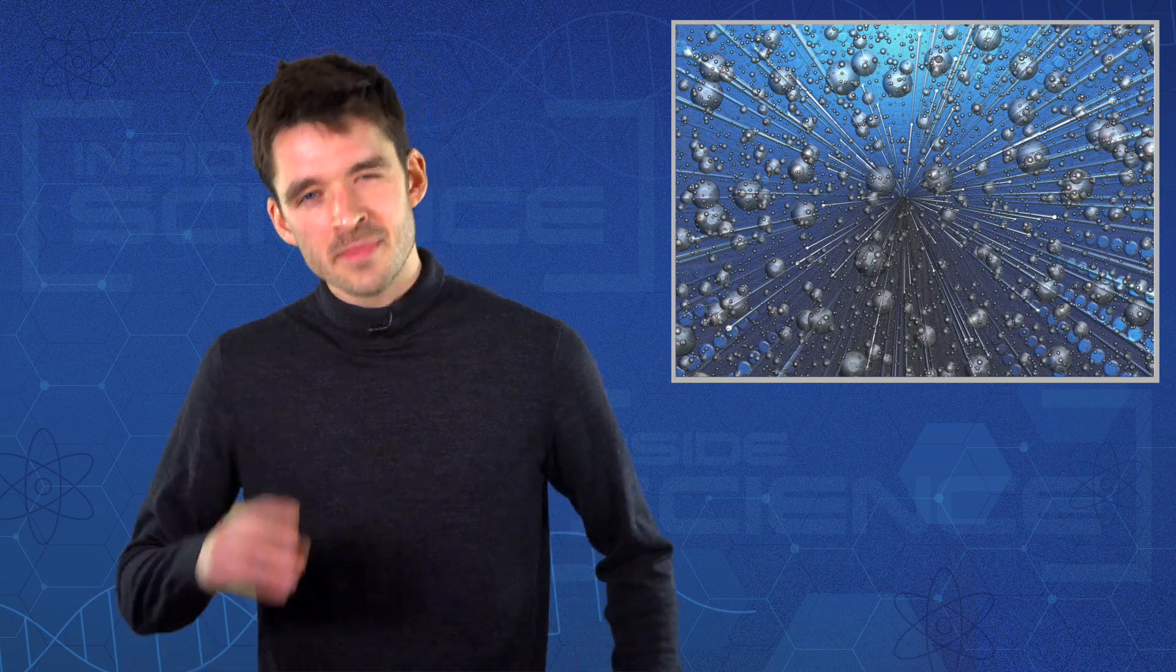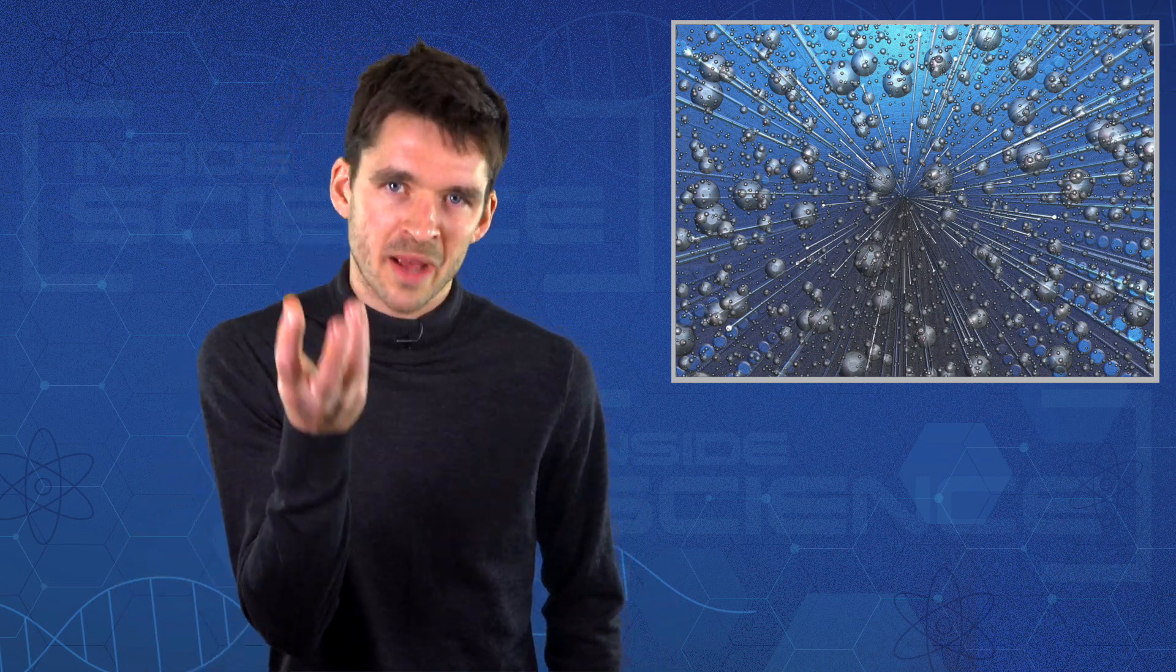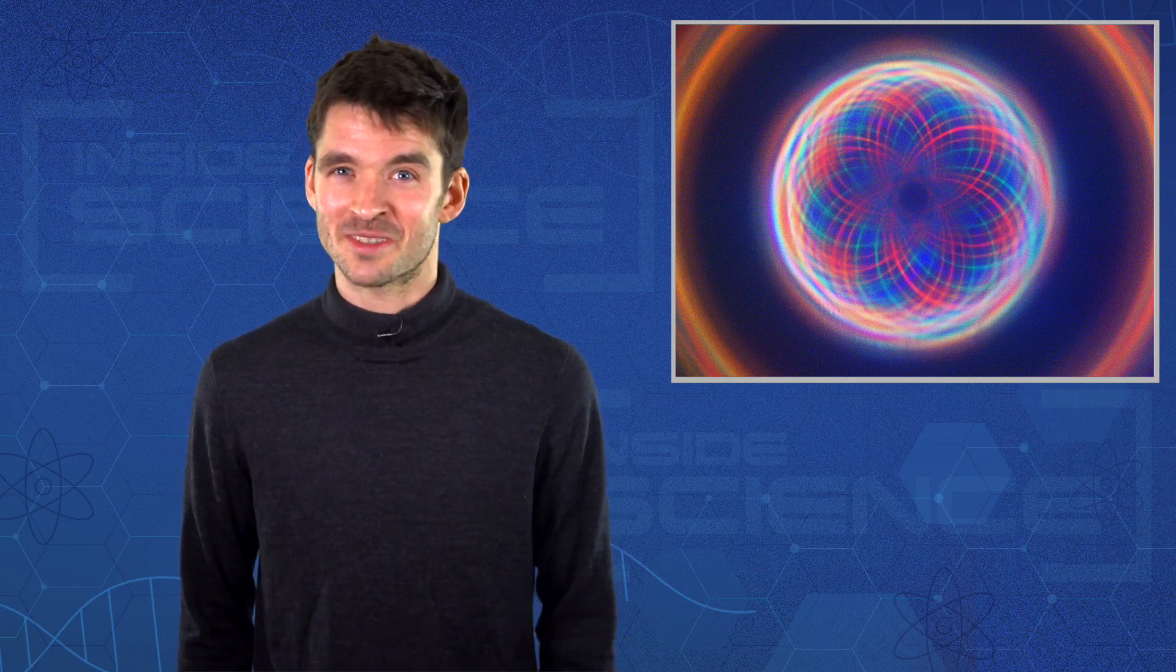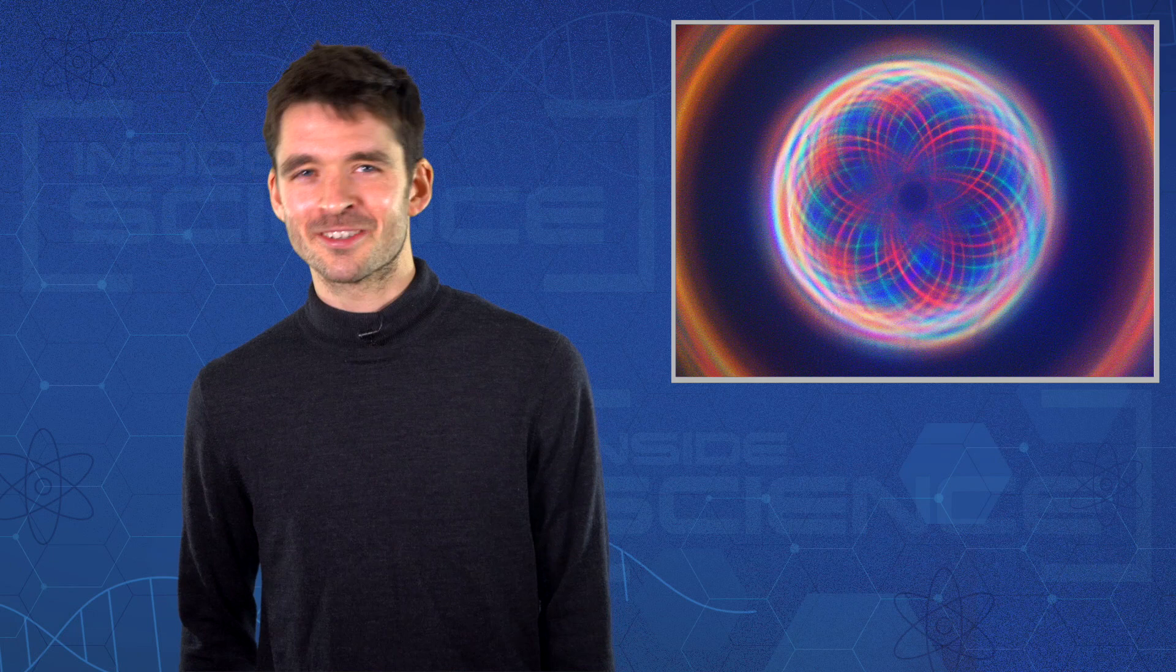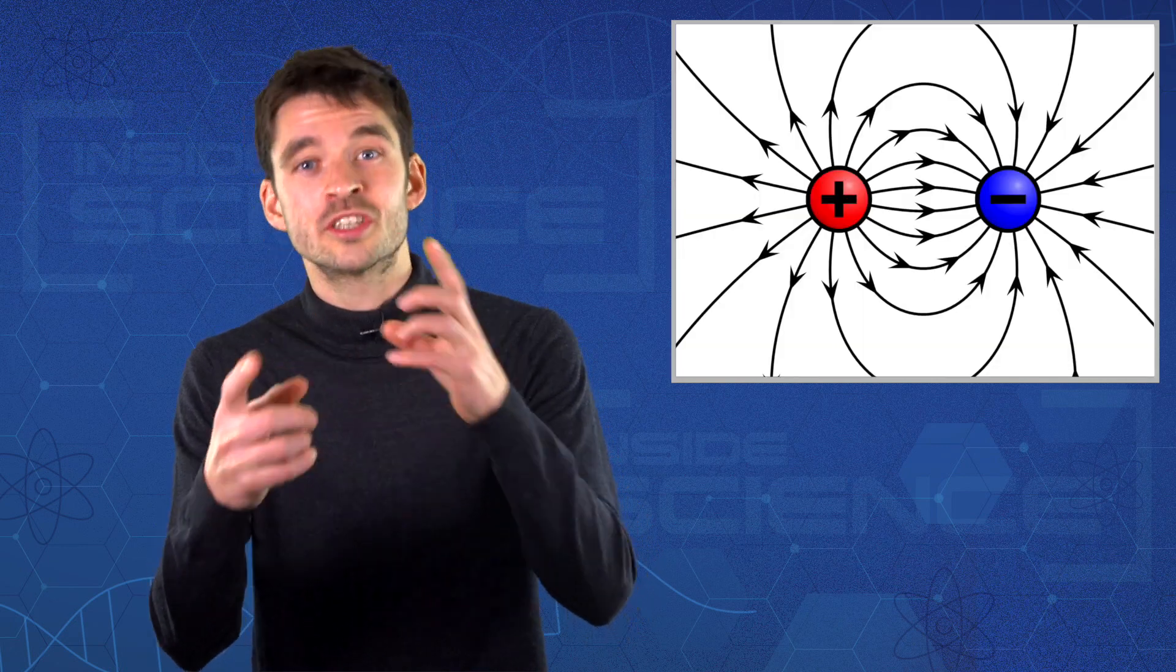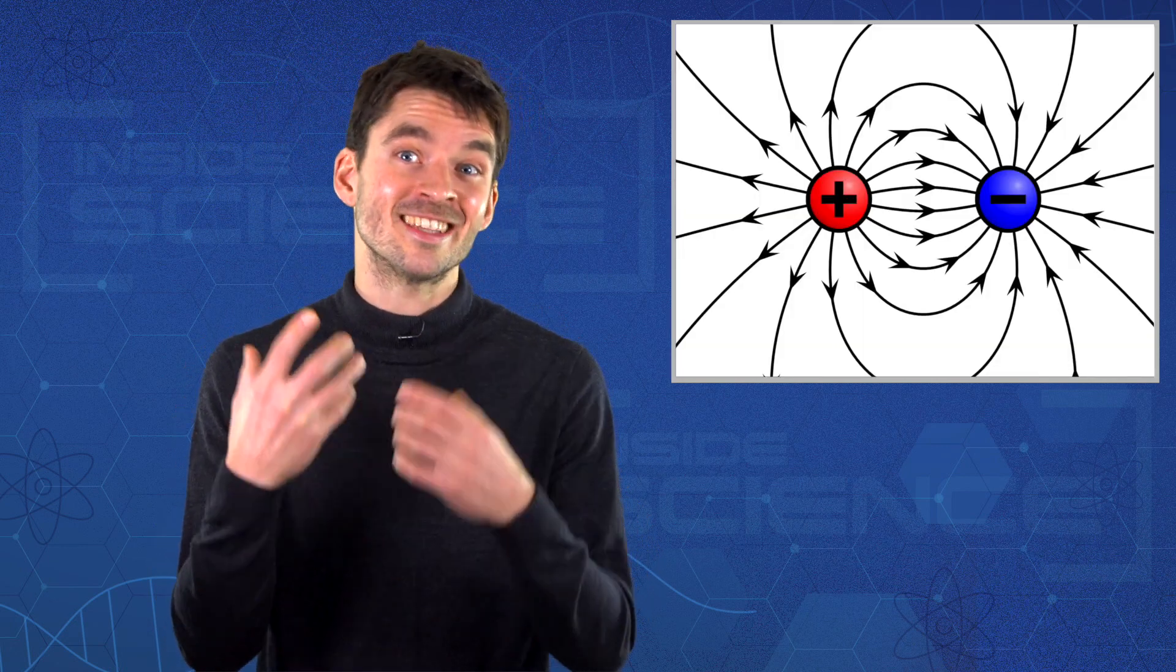But up until now, to manipulate spin, we've had to use powerful magnetic fields. And that is, until a team of physicists trying to do just this mistakenly blew up their own magnet, and in doing so, transformed this area of quantum science. They published the result of their magnetic mishap this month. They mistakenly created a powerful electric field, which could change a particle's spin itself.